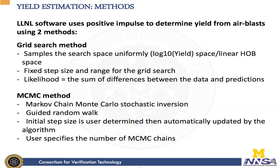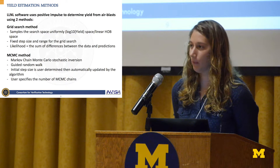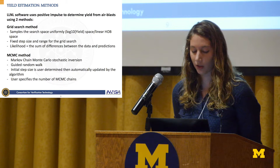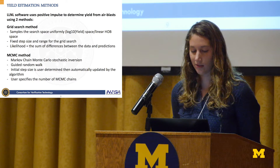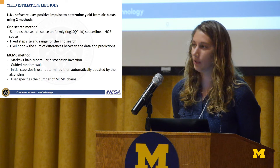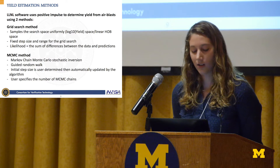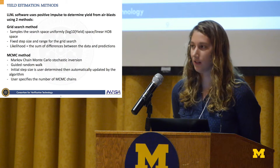In terms of the yield estimation software, it's designed to incorporate seismic and air pressure data. In our case with such small yield explosions, we didn't see usable seismic data, so this analysis uses just air blast data. The software has two possible methods, both using positive impulse to determine yield from air blasts. The first is a grid search method and the second is a Markov chain Monte Carlo stochastic inversion. The main difference is that the grid search method searches uniformly, while the MCMC method does a guided random walk. In both cases the user determines the initial step size; in the MCMC method the step size is then updated. The user also selects the number of chains — in our case we used four — which begin near the edge of the search space.